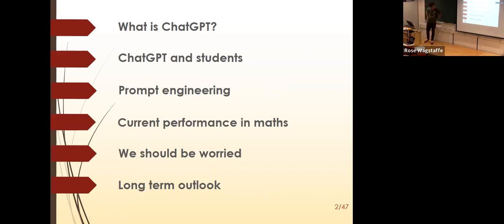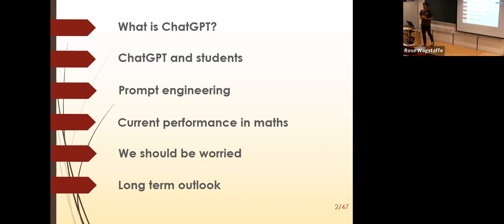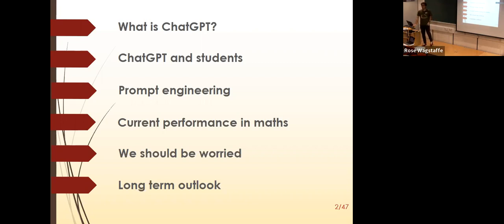The six parts are: what is ChatGPT; ChatGPT and students; what students can do with it; prompt engineering — a way to improve what ChatGPT does; current performance in maths, specifically whether it can pass certain exams; and long-term outlook — what happens in 10 years, which nobody knows, but what should we prepare for.